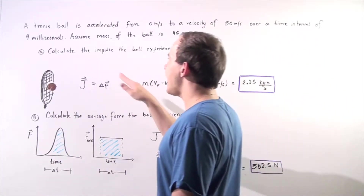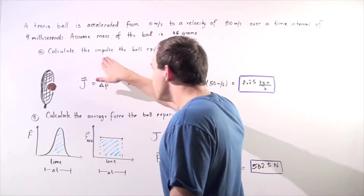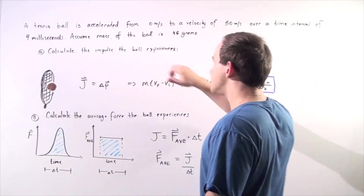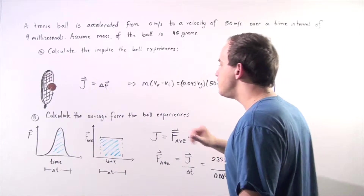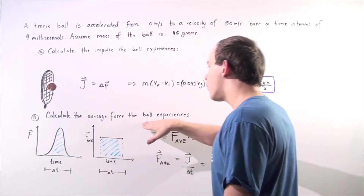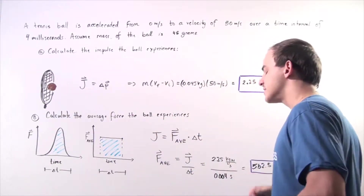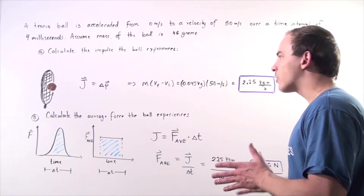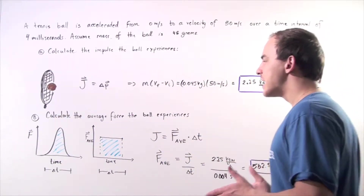we want to calculate: A, the impulse the ball experiences, and B, the average force the ball experiences during the collision.